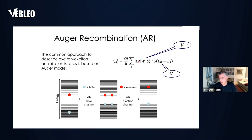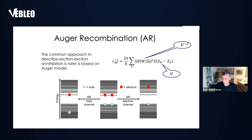Whereas the matrix element that couples the initial biexcitonic state to the final single excitonic state — the Coulomb coupling — scales inversely proportional to the volume squared. So from this naive scaling argument, treating the particles as non-interacting, the Auger rate would scale inversely proportional to the volume, or the Auger lifetime would scale linearly with volume. This means bigger particles would show slower Auger. One way to control the Auger lifetime, essential for high quantum yields, is to go to bigger particles.